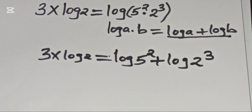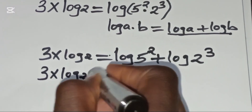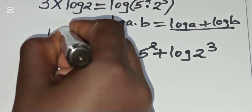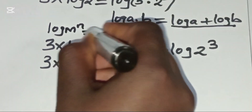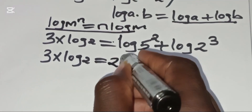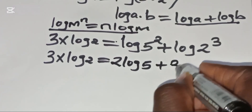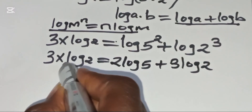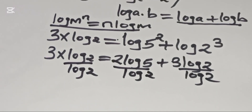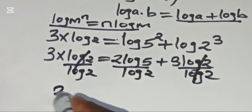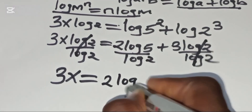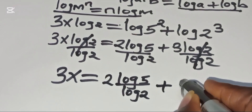Now applying the power rule property — log(m^n) = n·log(m) — to the right-hand side, we get 3x·log 2 equals 2·log 5 plus 3·log 2. We then divide both sides by log 2, so that we have 3x equals 2·log 5 divided by log 2, plus 3.